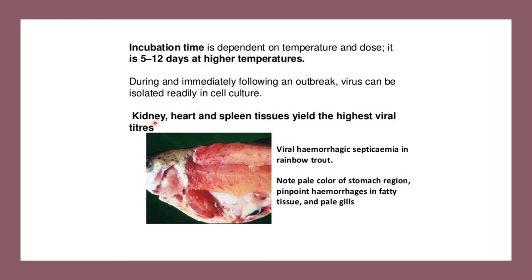The kidney, heart, and spleen tissues yield the highest viral titers. In this figure, we have viral hemorrhagic septicemia in rainbow trout. Note the pale color of the stomach region, pinpoint hemorrhages in the fatty tissue, and pale gills.